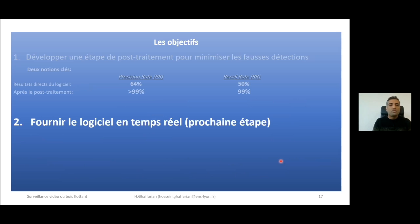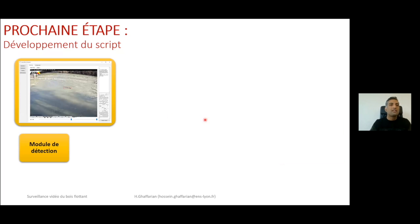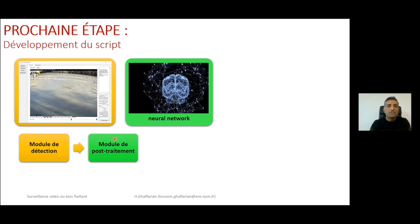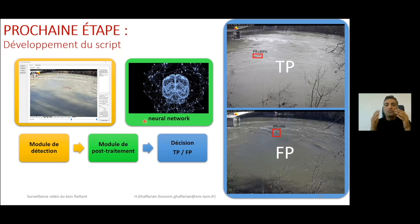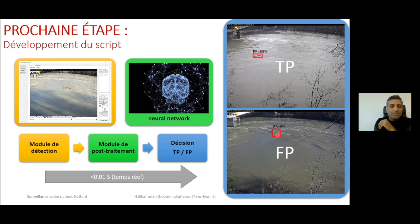The next step after having a reliable software is to run it in real time. We now have a detection module which can detect pieces of wood — either false positives or true positives — and then a post-treatment module containing a neural network and other post-treatments. With this module we can decide between true or false positives: for example, if the neural network gives 89% precision we can be almost sure it is a piece of wood; if only 5% then it is almost certainly a false positive. All these steps take less than 120 seconds from detection to decision.